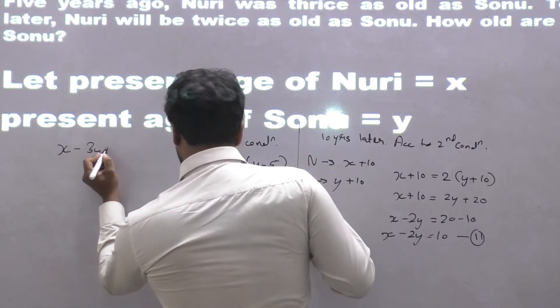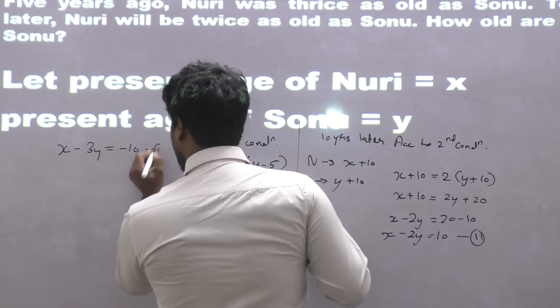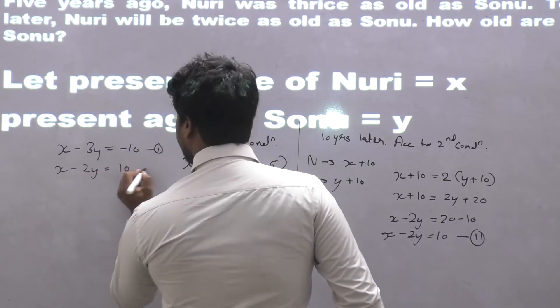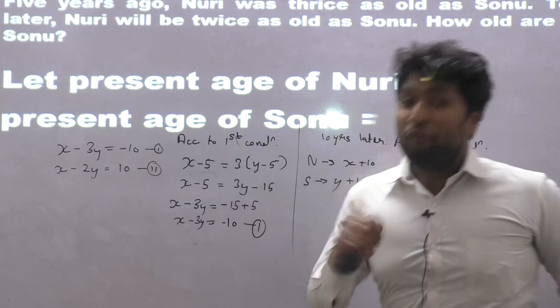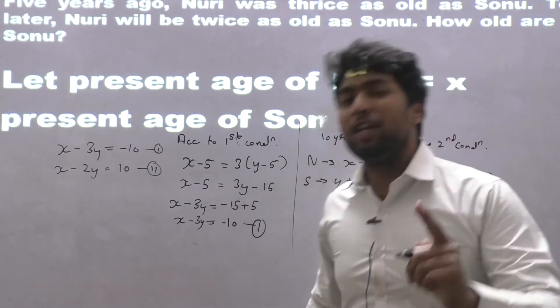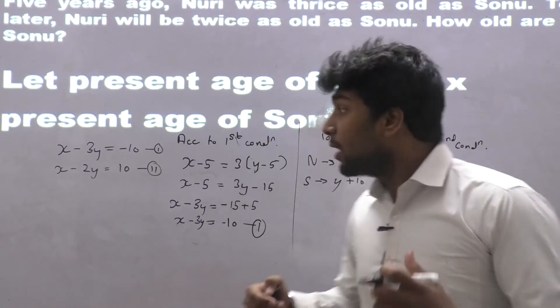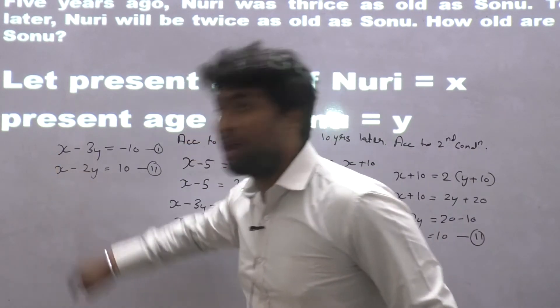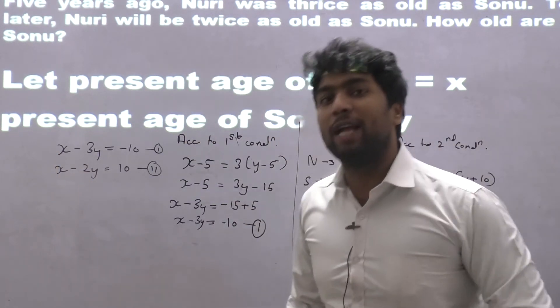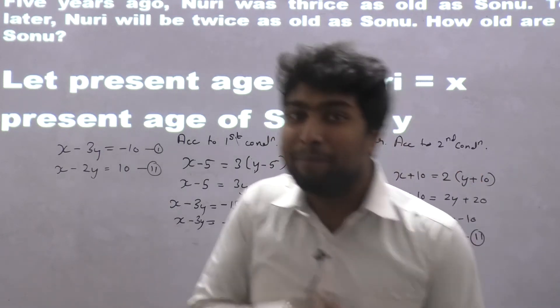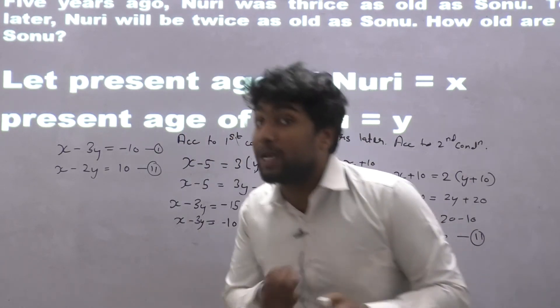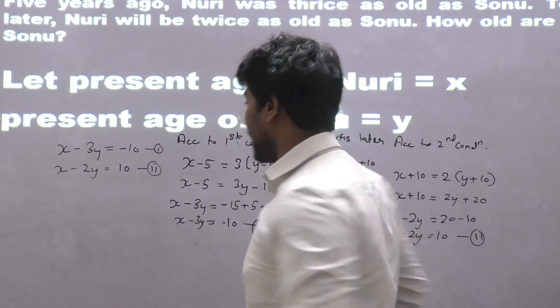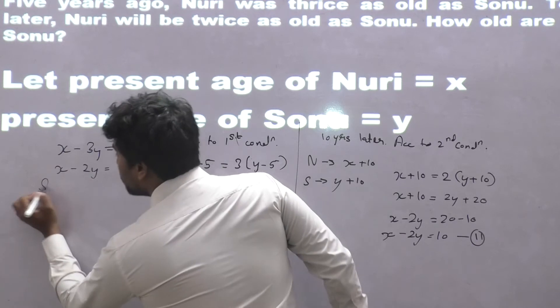Let me write the equations. x minus 3y equals minus 10, equation number 1. And x minus 2y equals 10, equation number 2. Before solving by elimination method, what should happen? What consistent steps should be followed? First step is we need to make terms the same. The terms are the same - here it's 1x, here also 1x. When the terms are the same, you need to check the signs. The signs are the same. So S for same, S for subtract. We will subtract.